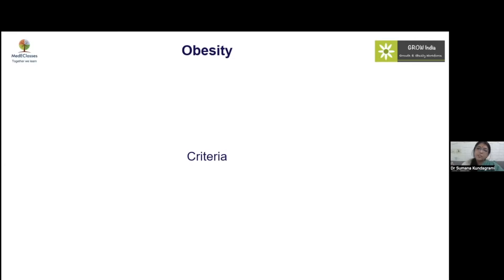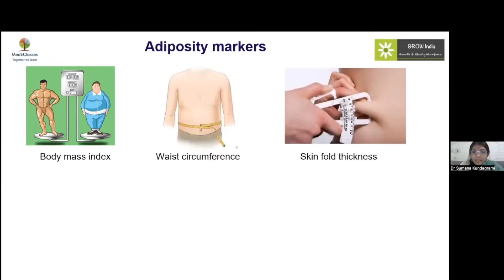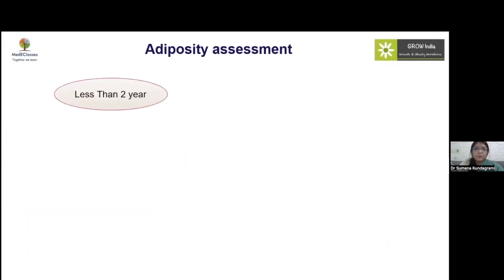Obesity means excessive fat accumulation that is detrimental to the body's wellbeing and health. When we talk about obesity, there are certain criteria to define obesity and overweight in children and adolescents. There are different markers of adiposity — the most common and practical one is the Body Mass Index (BMI). Others include waist circumference, skinfold thickness by Harpenden calipers, and more sophisticated tools like DEXA, bioimpedance, and plethysmography.